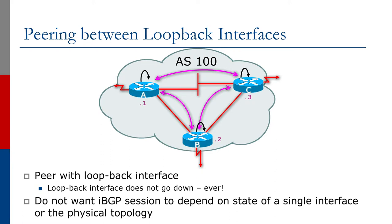It's BGP's job to keep track of prefixes at the AS level. BGP has no idea of the internal topology within an AS, and if the IBGP information can't reach all the routers in your network, it will break.